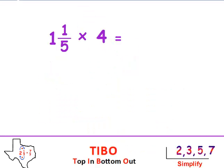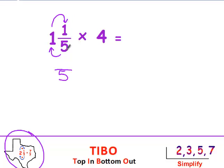The first thing you need to do is make sure all of the mixed numbers or whole numbers are in fraction form. I do this by using the Texas method. I leave the denominator the way it was, so it's over 5. First I multiply, and then I add. 5 times 1 is 5, plus 1 is 6. And the 4, I'm going to write it as 4 over 1 to put it in fraction form.